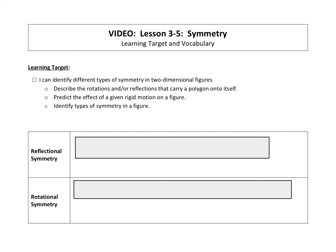So our learning target: we will be able to identify different types of symmetry in two-dimensional figures. We will describe the rotations and/or reflections that carry a polygon onto itself. We will predict the effect of a given rigid motion on a figure and identify types of symmetry in a figure.